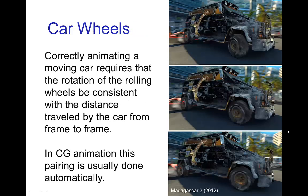When cars are animated, it requires that the speed the car is moving is consistent with the rotation of the wheels. We see this in a few frames from Madagascar 3. The car is moving fairly slowly, and just tracking some marks on the front wheel, you see it's only turning by a small amount, but that's consistent with the speed the car is going and the distance it travels from frame to frame. In CG animation this pairing is usually done automatically, so it's somewhat more of a challenge for hand-drawn animation.